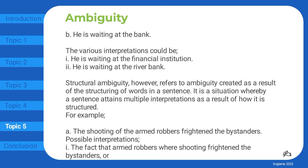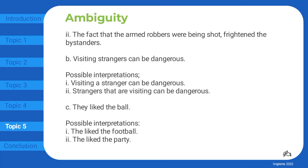Structural ambiguity refers to ambiguity created as a result of the structuring of words in a sentence — a situation whereby a sentence attains multiple interpretations as a result of how it is structured. For example: 'The shooting of the armed robbers frightened the bystanders.' Possible interpretations: the fact that armed robbers were shooting frightened the bystanders, or the fact that the armed robbers were being shot frightened the bystanders.